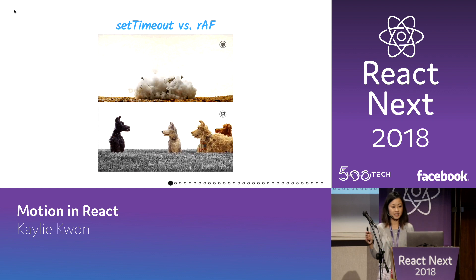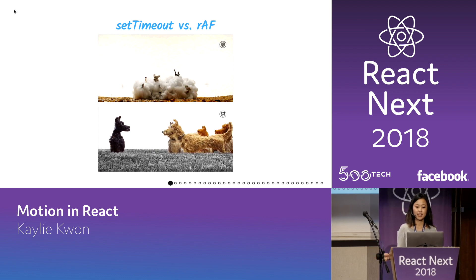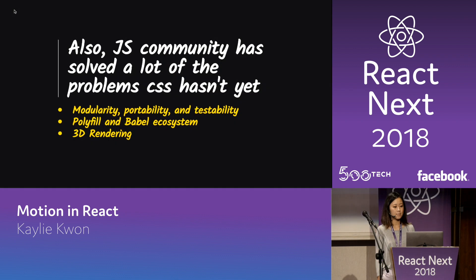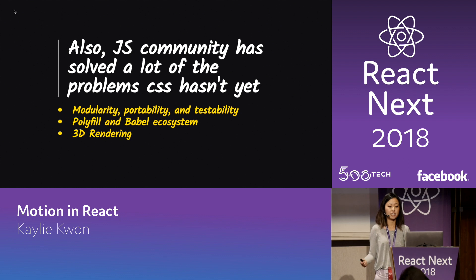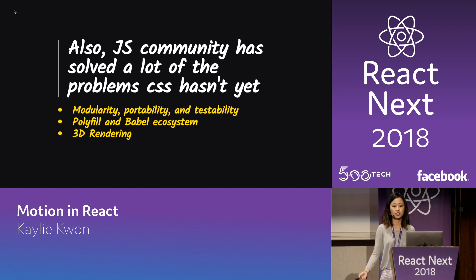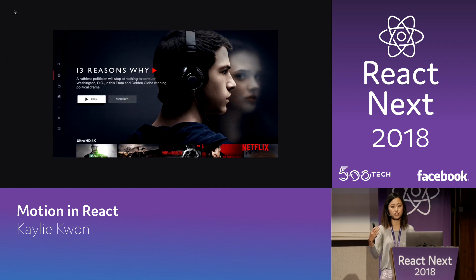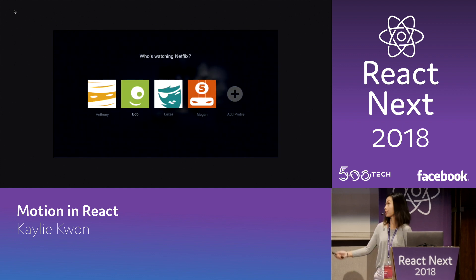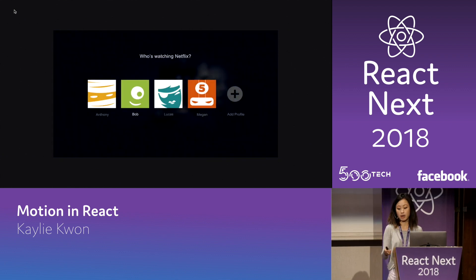The other benefit of JavaScript is that the JavaScript community has solved a lot of problems that CSS hasn't yet — around modularity, portability, and testability. We have frameworks like Jest and Babel to use features in advance. We could also do something really complex like 3D rendering, which we're actually experimenting with at Netflix right now. We use an in-depth transition using 3D rendering techniques, and we also need JavaScript because the recommendations you get will determine what box images you get, and based on that we might want to set a different priority.